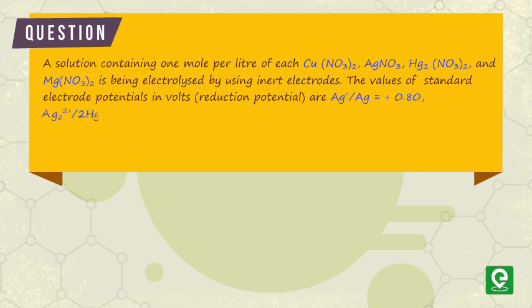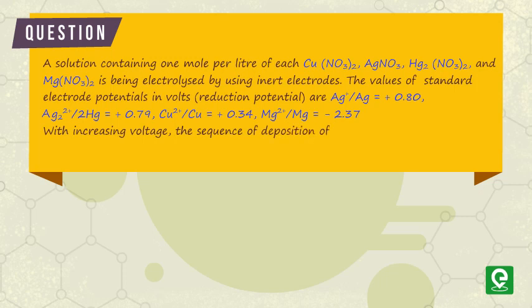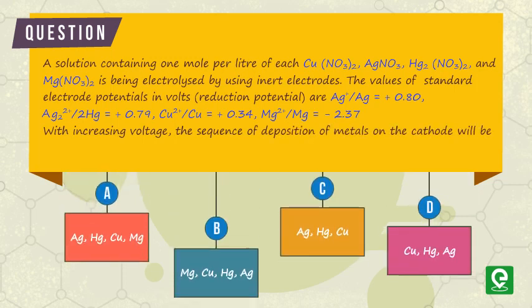Ag⁺/Ag = +0.80, Hg₂²⁺/2Hg = +0.79, Cu²⁺/Cu = +0.34, Mg²⁺/Mg = -2.37. With increasing voltage, the sequence of deposition of metals on the cathode will be... The options are given. This question was asked in IIT JEE 1984.